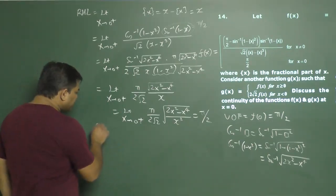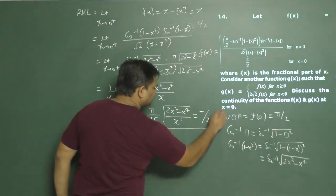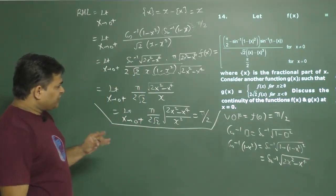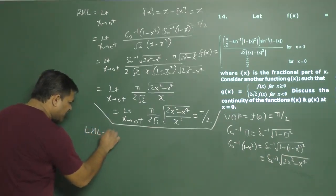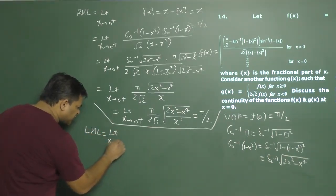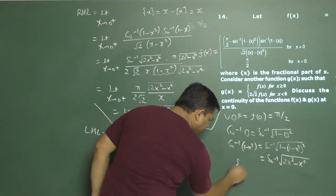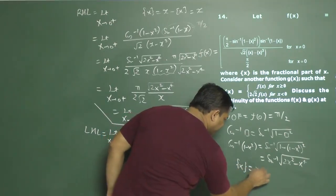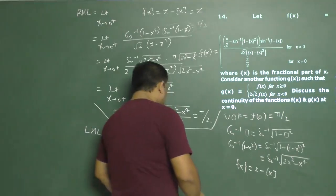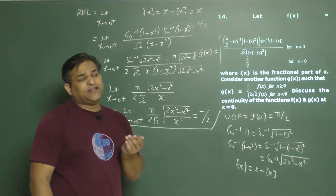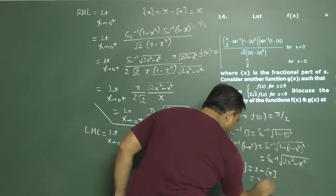Now let's talk about the left-hand limit. As x approaches 0 minus, we define the fraction part of x. For x slightly less than 0, we can write the fraction part of x as x minus the greatest integer of x. Since x is a small negative number, the greatest integer of x is −1, so the fraction part becomes x + 1.